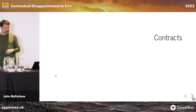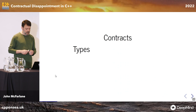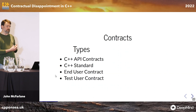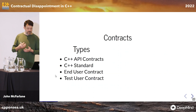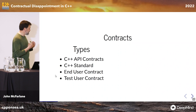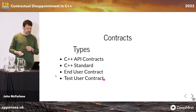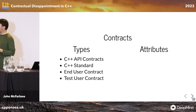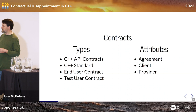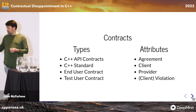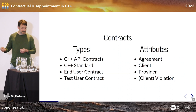So let's look at various contracts I identify as important when coding. There are four different types: the C++ API contract, the C++ standards contract, the end user contract — the one we as developers are most responsible for — and a special test user contract, which is quite different and something I want to talk about today. All contracts have various attributes: the agreement, who is the client and provider, and what happens when things go wrong — specifically when the client breaks the contract.